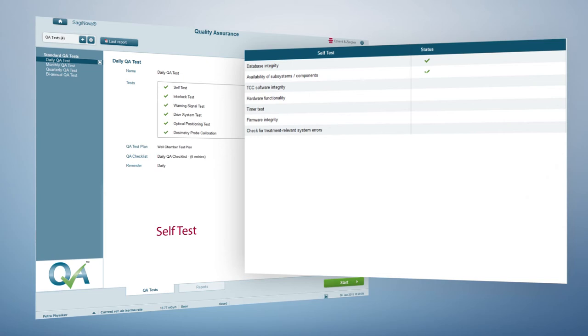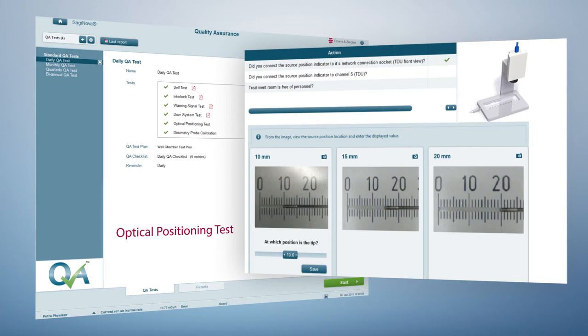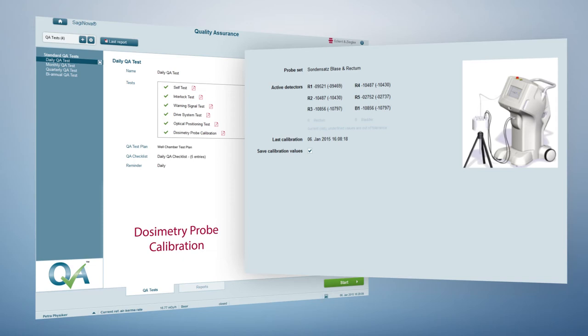Q-Assist is operated from the Saginova workstation. The highly customizable tool supports the user in adhering to highest quality assurance standards. Q-Assist tests are performed in sequence and consist of different function tests that verify whether the system and critical components are operating correctly.